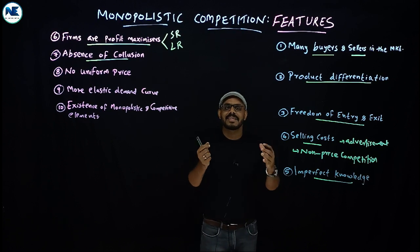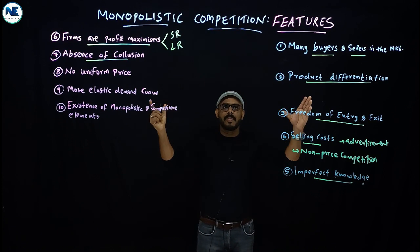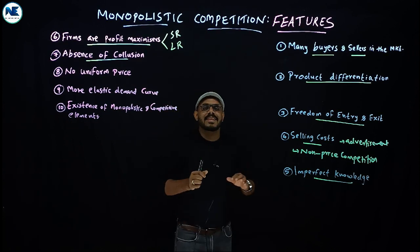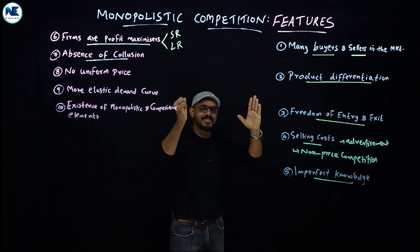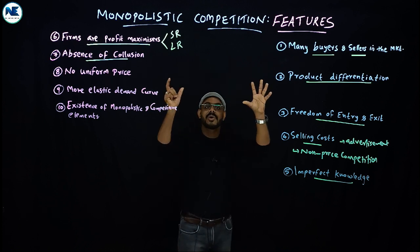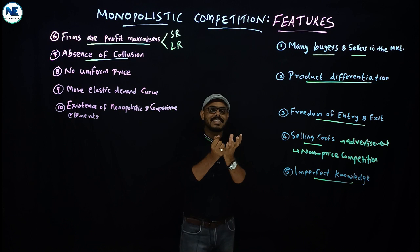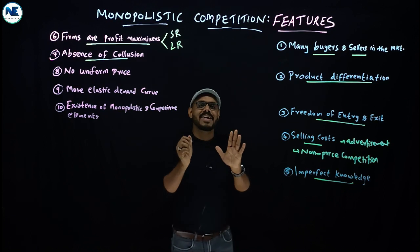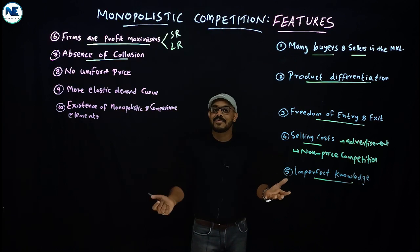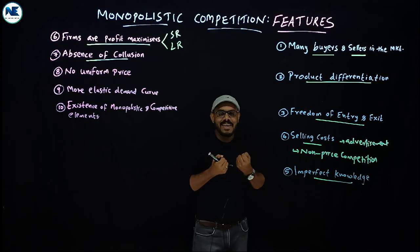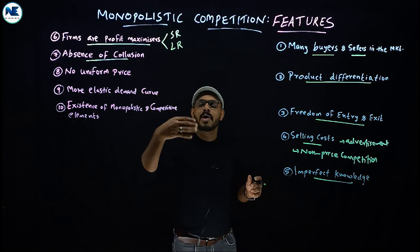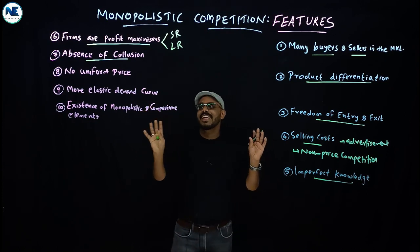The eighth point is the absence of collusion. Collusion refers to a group agreement or coordination among firms. In monopolistic competition, firms face direct competition with each other, so there is no collusion or joint agreement between firms. Each firm independently tries to attract customers and maximize its own profit without coordinating with rivals.